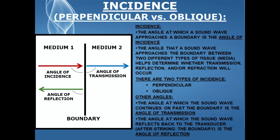There are two types of incidence: perpendicular and oblique. The angle at which a sound wave continues on past the boundary is known as the angle of transmission, and the angle at which the sound wave reflects back to the transducer after striking the boundary is the angle of reflection.